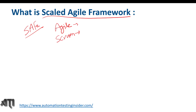Agile mainly focuses on two things: the delivery of the software to the customer, and the capability of handling requirement changes. These are the two important things in agile — the agile principle or agile model. And Scrum is a framework based on agile principles.